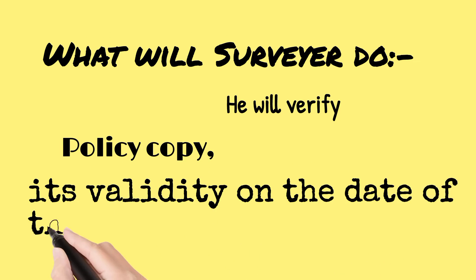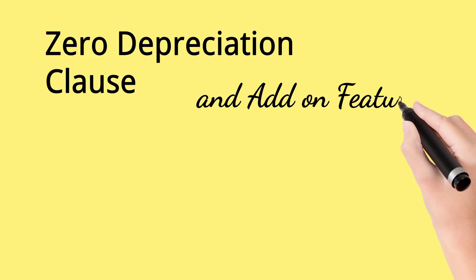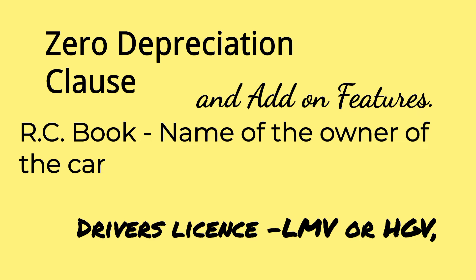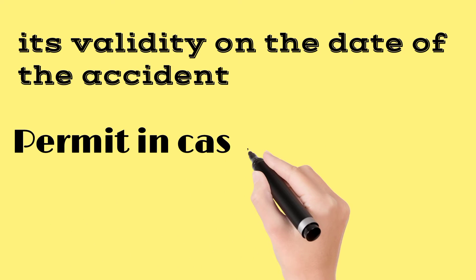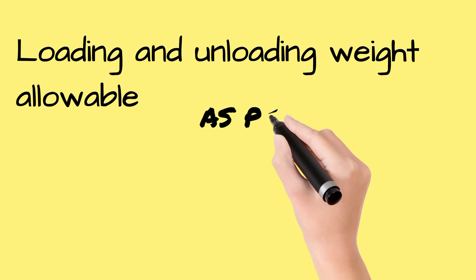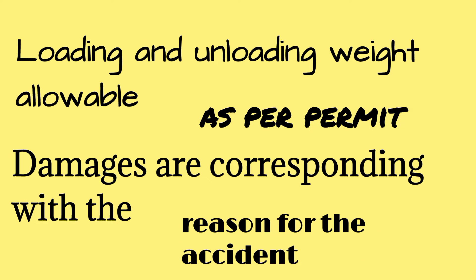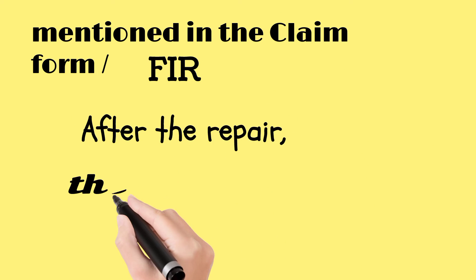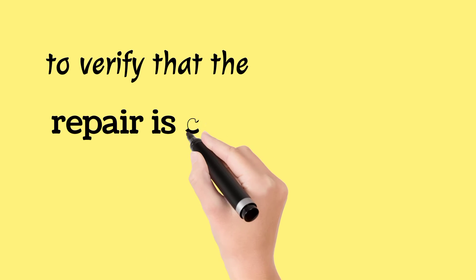The surveyor will verify: the policy copy and its validity on the date of the accident; zero depreciation clause and add-on features; RC book and name of the owner; driver's license — LMV or HGV — and its validity on the date of the accident; permit in case of a commercial vehicle; loading and unloading weight allowable as per permit; whether damages correspond with the reason for the accident mentioned in the claim form or a fire. After the repair, a final survey is carried out to verify that the repair is completed as per the earlier discussion.